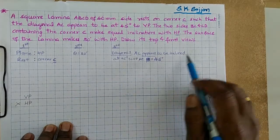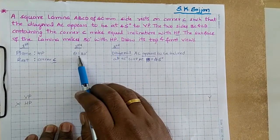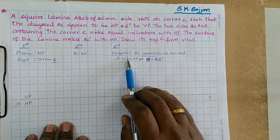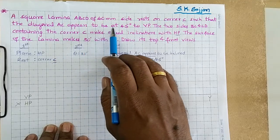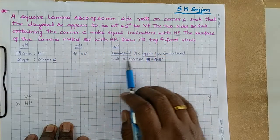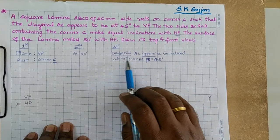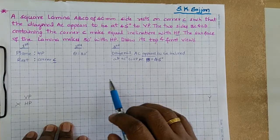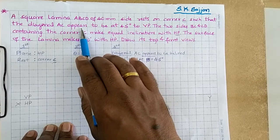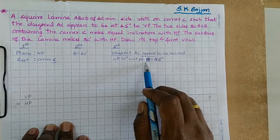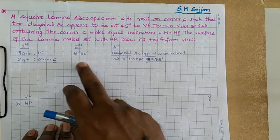For the second portion, it is clearly given that the surface of the lamina makes 30 degrees with HP — that is theta equals 30 degrees. For the third portion, the diagonal AC appears to be at 45 degrees to VP. Since the word 'appears' is used, this is an apparent angle measured with respect to VP, which means beta is given. Beta is 45 degrees in this problem.